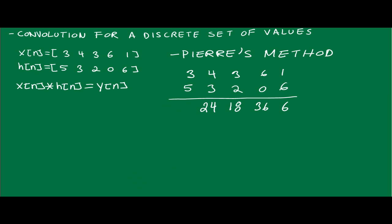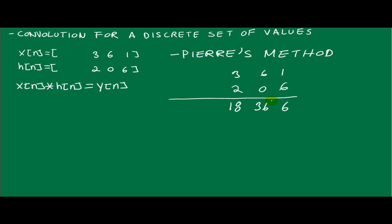What I'm going to do is shorten it to only three values instead of six, because that's going to take a while. So let's get rid of these. For the next row, you shift — just like in regular multiplication — so you place zeros: zero, zero, zero, zero.